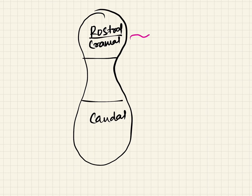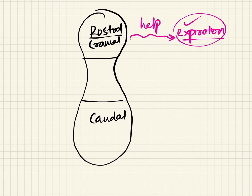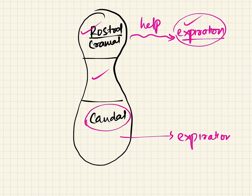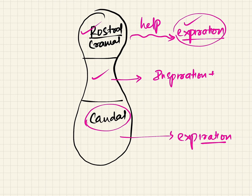The caudal region performs expiration by innervating the expiratory muscles. The intermediate part causes inspiration and also increases the caliber of inspiration by acting upon the muscles of the upper respiratory tract — the pharynx and larynx — innervating them and increasing the caliber of airflow.